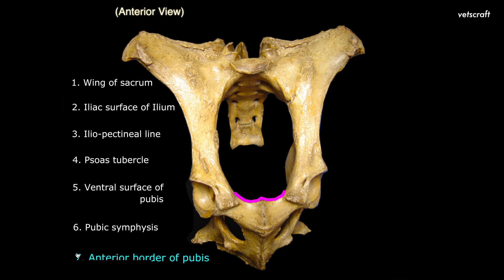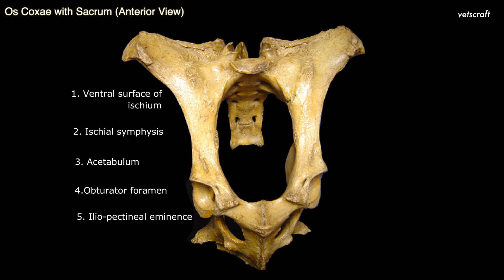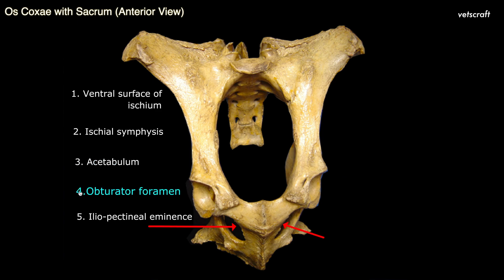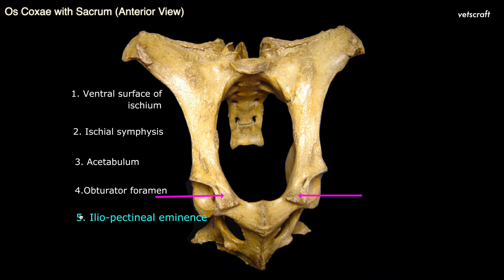Anterior border of the pubis. This picture shows the anterior view of oscoxae with sacrum. Ventral surface of the ischium. Ischial symphysis is formed by fusion of adjacent medial borders of the ischium. The acetabulum is a cotyloid type of cavity situated on the ventral lateral aspect of the oscoxae. The obturator foramen is a large elliptical foramen on the floor of the pelvis, formed partly by pubis and partly by ischium. The iliopectineal eminence on the anterior border of pubis gives attachment to the prepubic tendon.